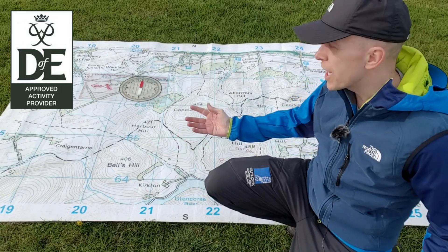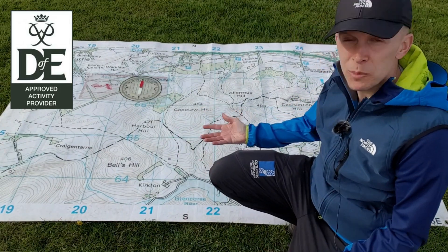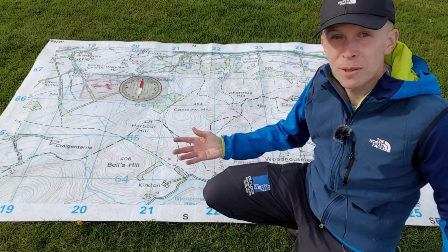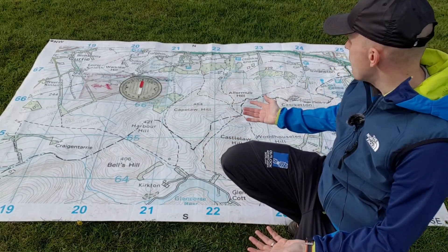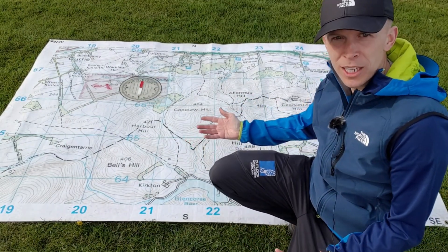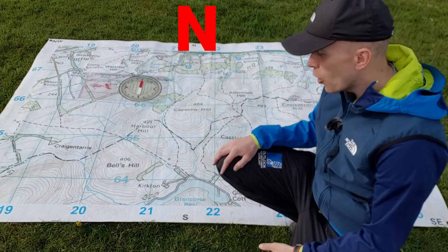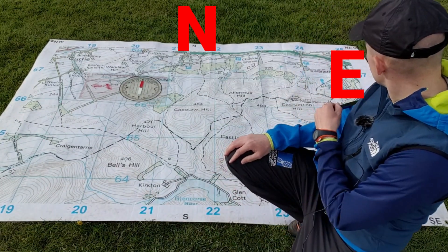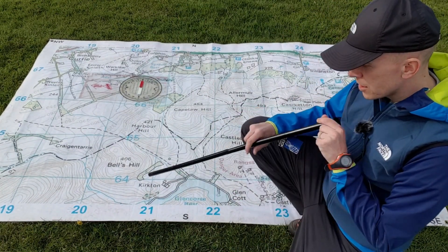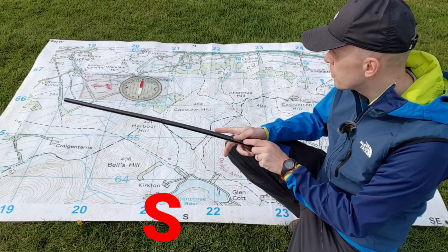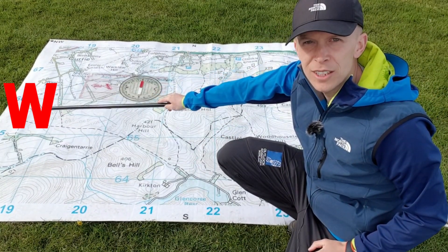Being able to express what direction we're walking by using the map and relating it to the ground is simply done. On an ordinary survey map, as long as the writing's up the correct way, north is always at the top. East is over to the right, south down to the bottom, and west over to the left.